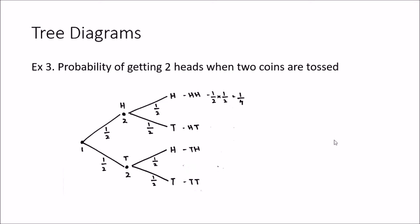We are going to toss a first coin and then a second coin and find the probability of getting heads both times. In the tree diagram, the first event is tossing the coin — we can get a head or a tail, each with probability one half. For the second event, irrespective of the first outcome, when we toss the second coin we can again get a head or a tail.